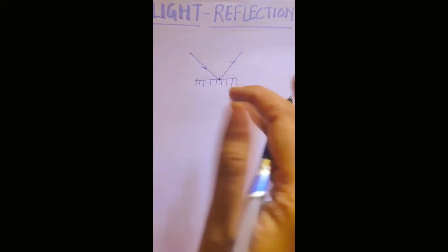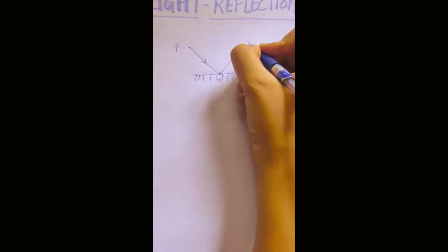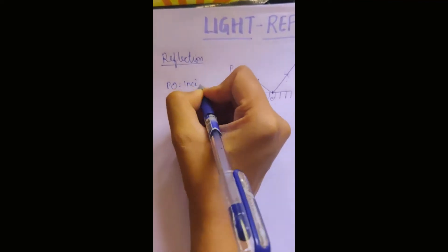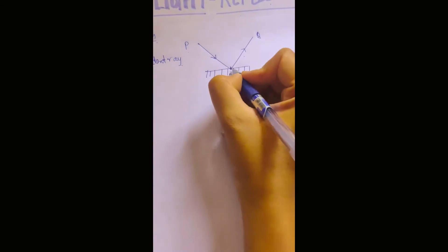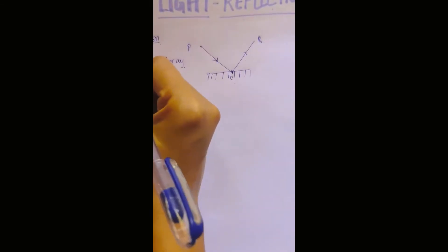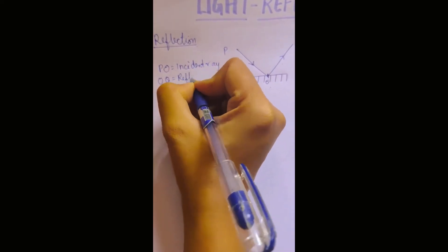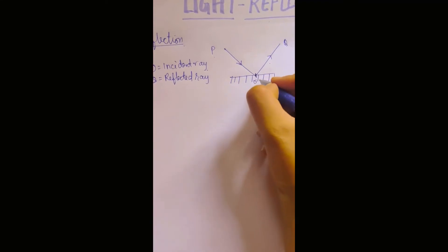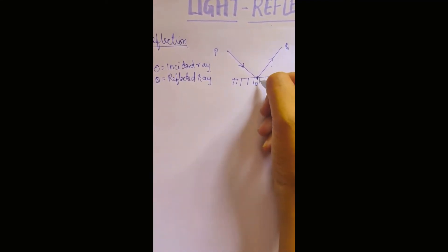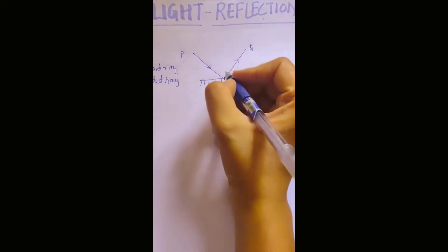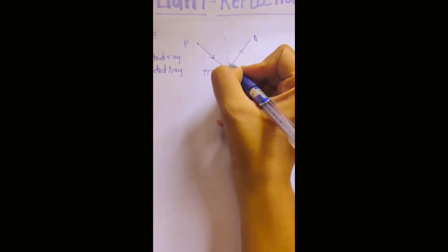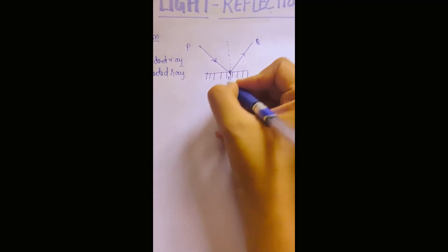Let's name the rays: this ray P-O is known as the incident ray, O is the point of incidence, and O-Q is known as the reflected ray. So this O-N is the incident ray which is falling on the mirror, and O-Q is the reflected ray which bounces back after getting reflected. From the center where the reflection takes place, we draw a straight line using a scale, and this straight line is known as the normal.